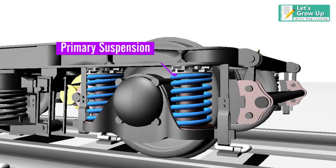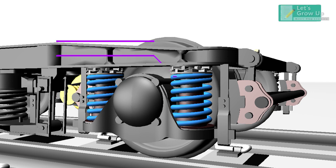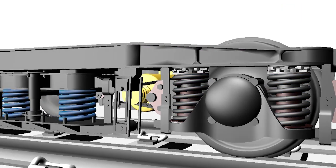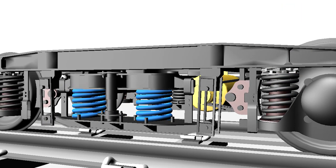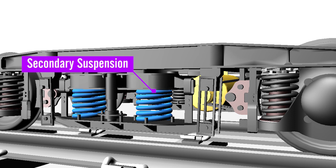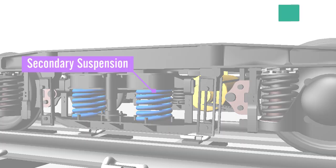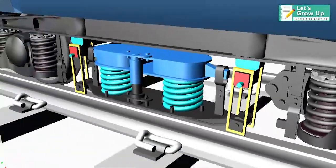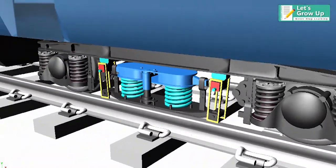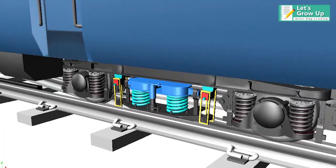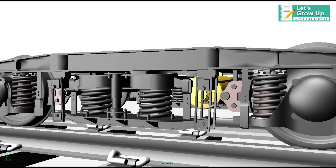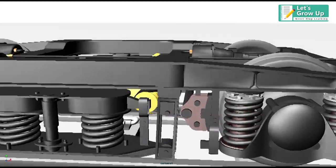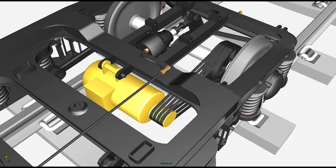Primary Suspension: It is through the dish pot arrangement. Secondary Suspension: It is an arrangement of ICF bogeys through bolster springs. The bolster is not welded or bolted anywhere to the bogey frame; it is put on a socket adapter.